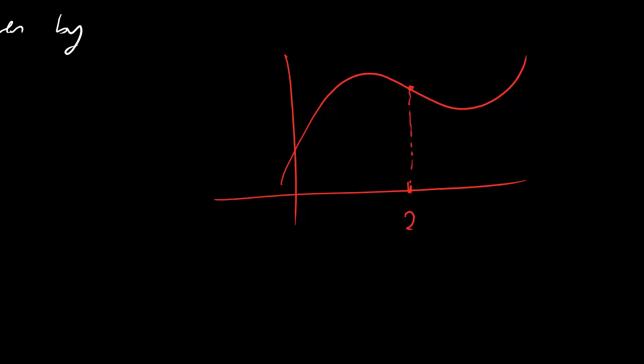There's a tangent line at 2, which moves right along with the function. And we're trying to estimate the slope of that. This slope is exactly what we mean by f prime of 2.